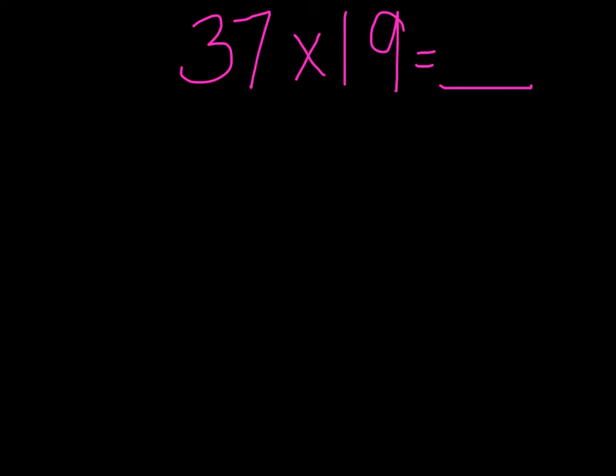Alright guys, here is our first example. It is 37 times 19 — a 2-digit by 2-digit problem that we're going to solve. How we're going to solve it is by using multiplication cluster problems. You may not have heard of that strategy before. It's going to be different than our open array and different than our traditional algorithm, but it's going to give you another tool to solve multiplication problems. So I want you to write down the few multiplication problems I'm going to write below this one in your notebook.